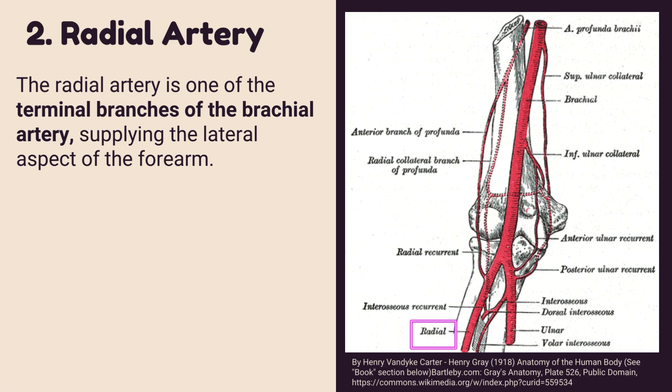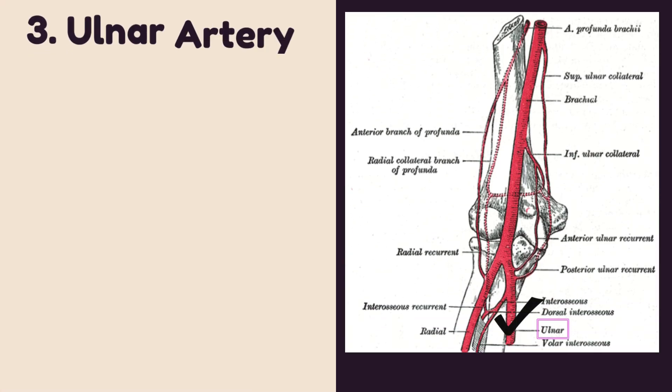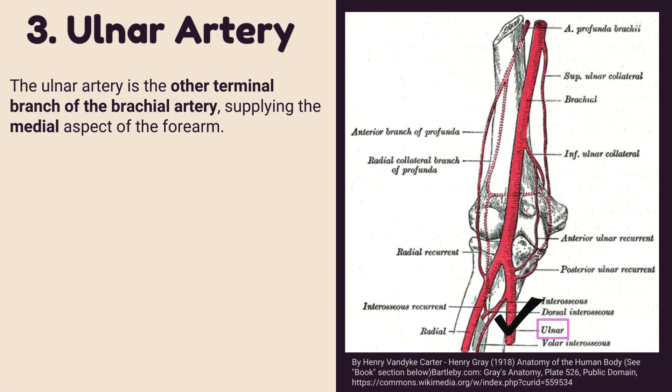The radial artery is one of the terminal branches of the brachial artery, supplying the lateral aspect of the forearm. It gives the following branch: the radial recurrent artery, which arises from the radial artery just below the elbow and anastomoses with branches from the profunda brachii.